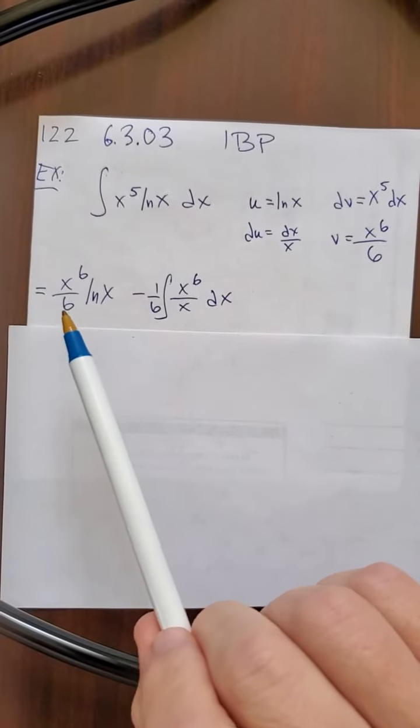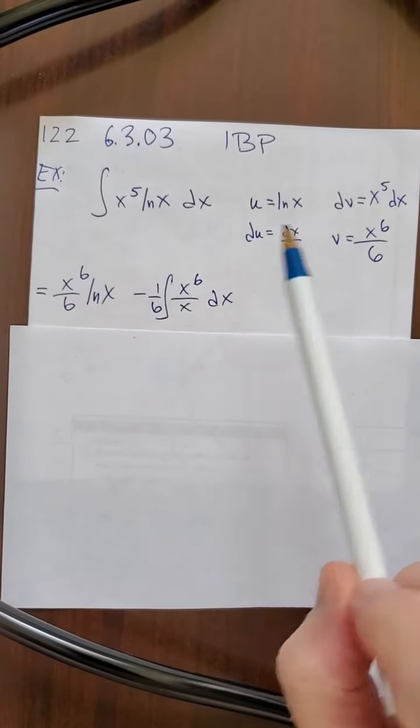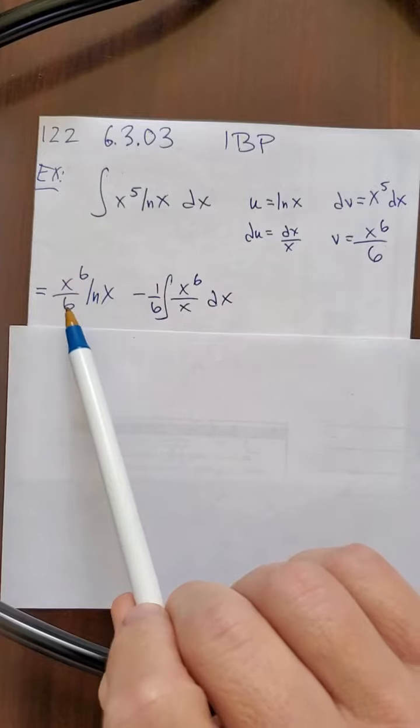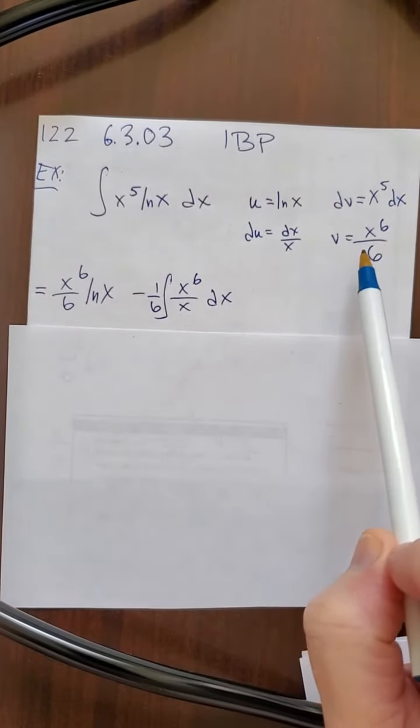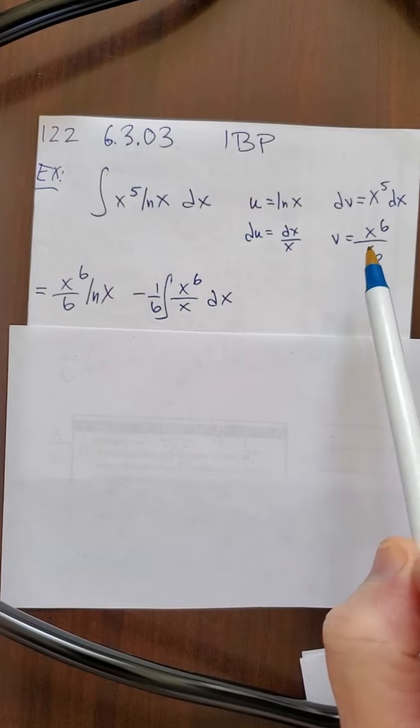Well, my uv is going to be x to the 6th over 6 times ln x, minus the integral of v du. So my v is x to the 6th over 6.